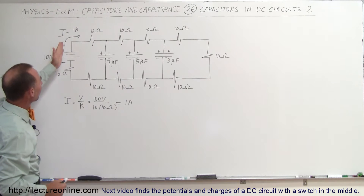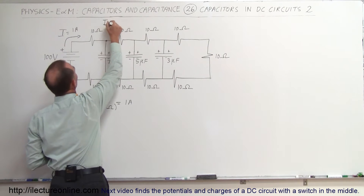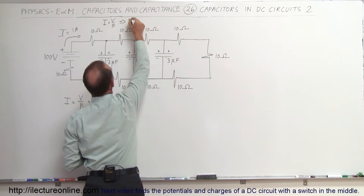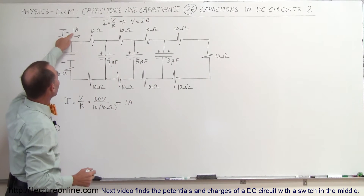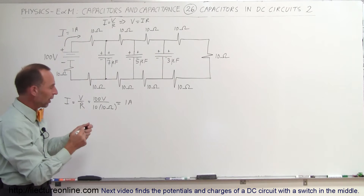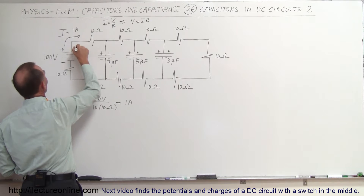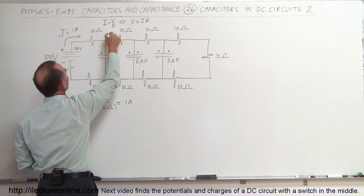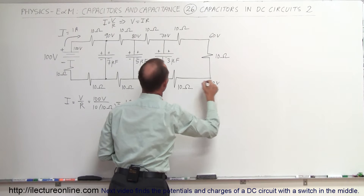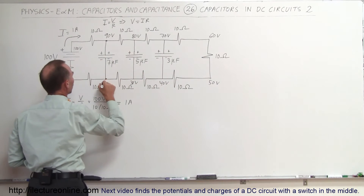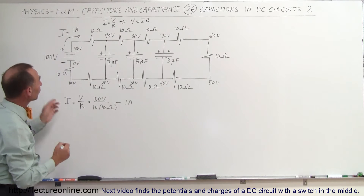The next thing we want to do is figure out what the potential drop is across each resistor. We know that I equals V over R, which means that the potential difference across each resistor is going to be I times R — again that's from Ohm's law. We have 1 amp of current and 10 ohms of resistance, so there's a 10 volt drop across each resistor. Every time we go across a resistor the voltage will drop by 10 volts. Starting at 100 volts at one end: 90, 80, 70, 60, 50, 40, 30, 20, 10, and then back to 0 volts across the last resistor. The battery then increases that back to 100 volts, and around we go.